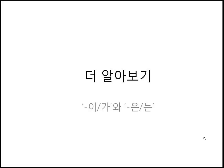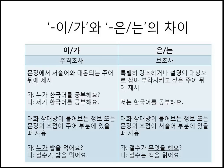더 알아보기. 이가 and 은는. 이가 and 은는 are all subject particles which are attached after the subject of the sentence. But 이가 and 은는 have a tiny difference between them. So let's talk about those differences.